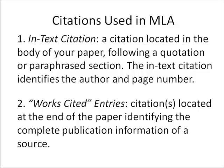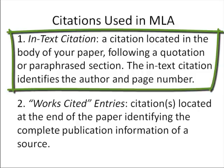To begin, there are two types of citations: in-text citations, which appear in the body of your paper, and works cited entries, which appear at the end of your paper. Why is it necessary to have both? In-text citations follow quotations or paraphrased information. Since they appear in the body of your paper, we want to avoid them taking up too much space, which would distract your reader. In-text citations only identify the author's last name and page number.